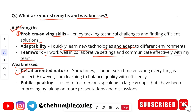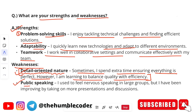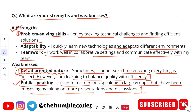For weaknesses, you can say detail-oriented nature: 'Sometimes I spend extra time ensuring everything is perfect; however, I am learning to balance quality with efficiency.' Always give your weakness in a way that also gives a good impact about you. Detail-oriented is actually a good quality, but it can cause you to miss deadlines — that's why it's considered a weakness. Another example: public speaking — 'I used to feel nervous speaking in large groups, but I have been improving by taking on more presentations and discussions.' Whenever saying your weaknesses, always add that you are trying to overcome it.